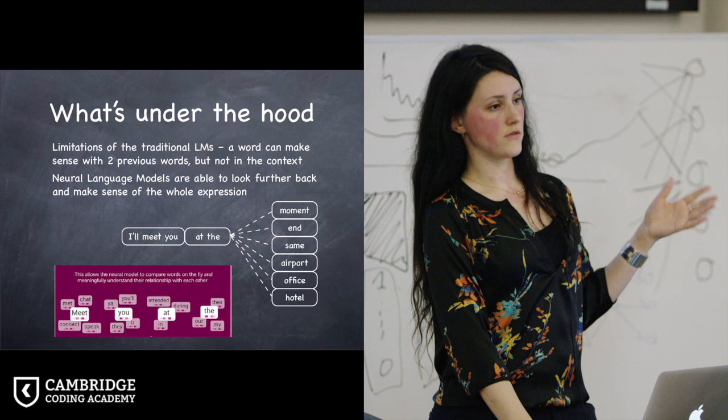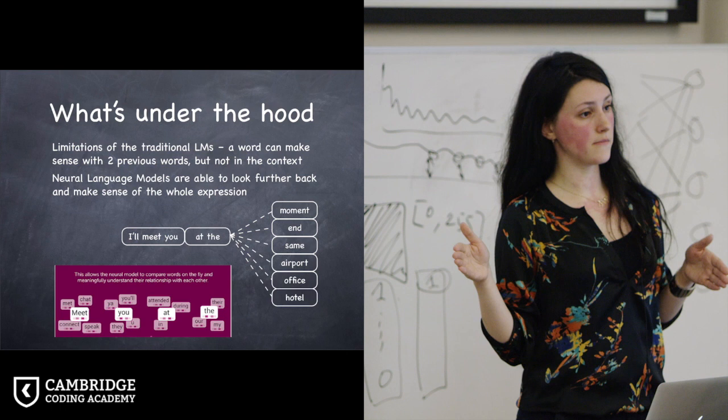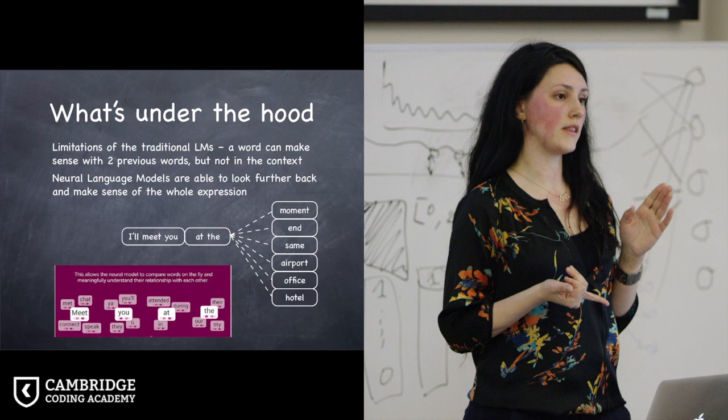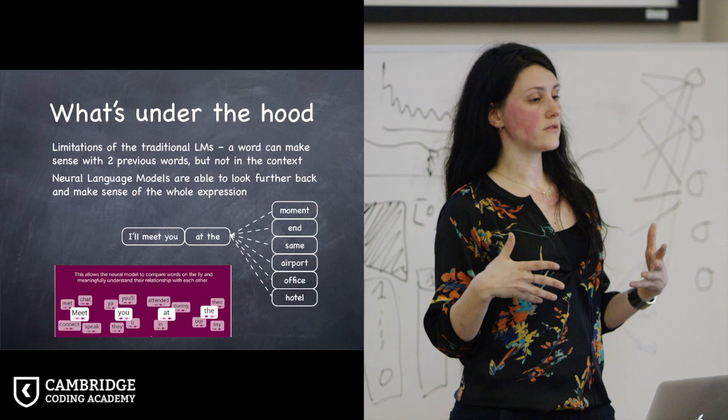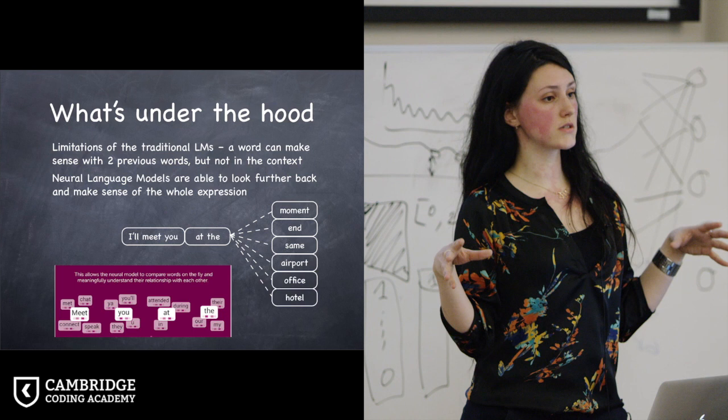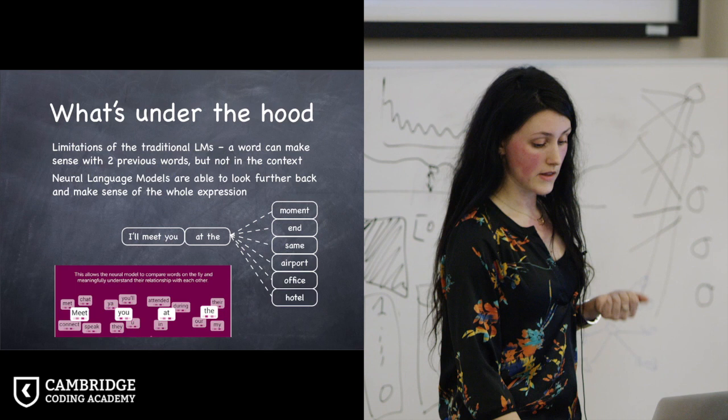But what it cannot do is to basically consider a broader context. Because if you know that the beginning of this phrase was, I'll meet you at the, you probably wouldn't predict neither of those three words. But you would rather predict something that is related to a place. And the neural network language models are capable of doing that. They are learning the representation of each word. And then they also learn how these words are connected together in a sentence. That's basically the breakthrough in this area.